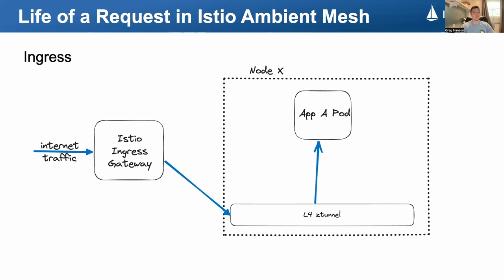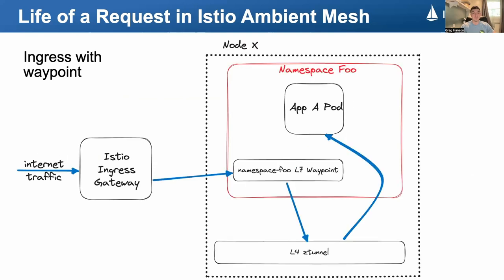So I've covered calls between two ambient-enabled pods, but what about calls from outside the mesh? Pretty straightforward. The request comes in through an ingress gateway and is sent through the destination's node local Z-Tunnel and eventually the destination app. And if we add a waypoint into the path, the request is routed to the destination's waypoint first, then the co-located Z-Tunnel, and finally the destination app itself.